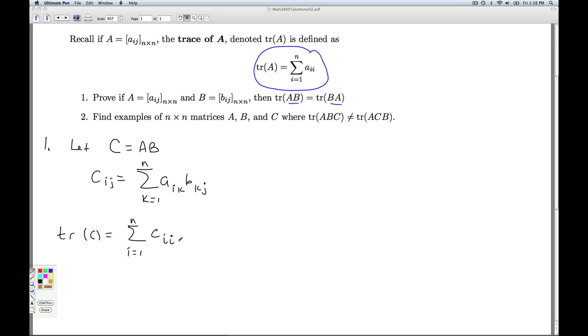Well, what's the II entry of C? Well, here's the formula for the IJ entry. So if I want the II entry, everywhere I see a J in this formula, I'm going to plug I in.